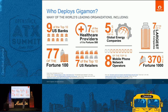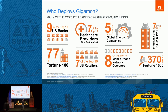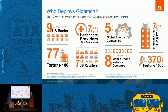Who deploys Gigamon? We are deployed in a lot of institutions — in the Fortune 100 and all kinds of customer verticals. These customers are now migrating into virtual infrastructure, both VMware and OpenStack environments, and they need continuous visibility as they migrate to the next business infrastructure.